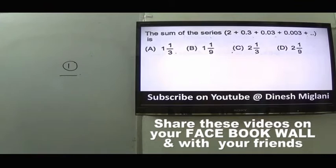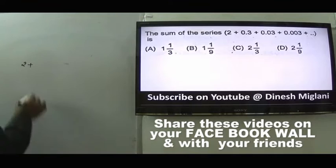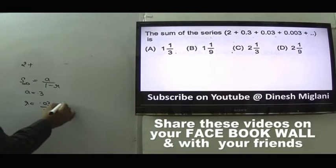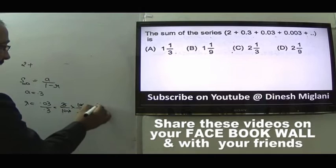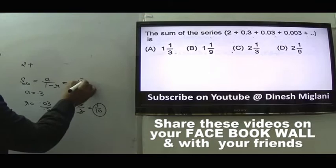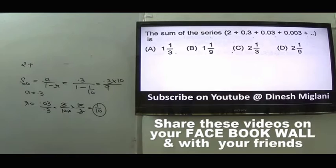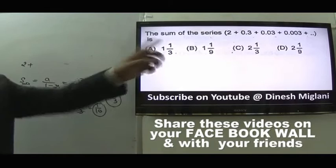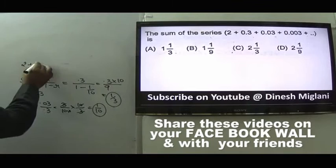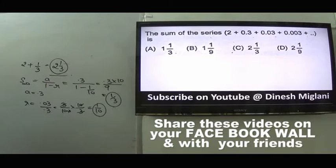Question 11: Find the sum of the series 2 + 0.3 + 0.03 + 0.003 + ... to infinity. This is an infinite GP with first term a = 0.3 and common ratio r = 0.03/0.3 = 1/10. Sum of infinite GP = a/(1-r) = 0.3/(9/10) = 3/9 = 1/3. Final answer = 2 + 1/3, which is 2⅓. Answer is C.